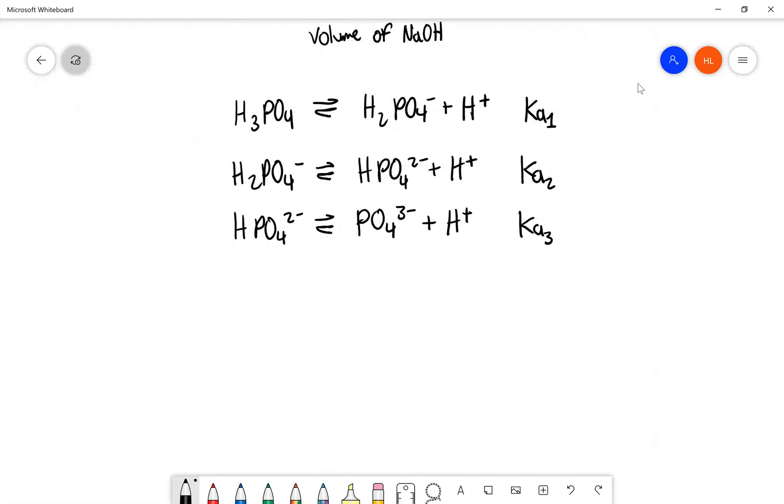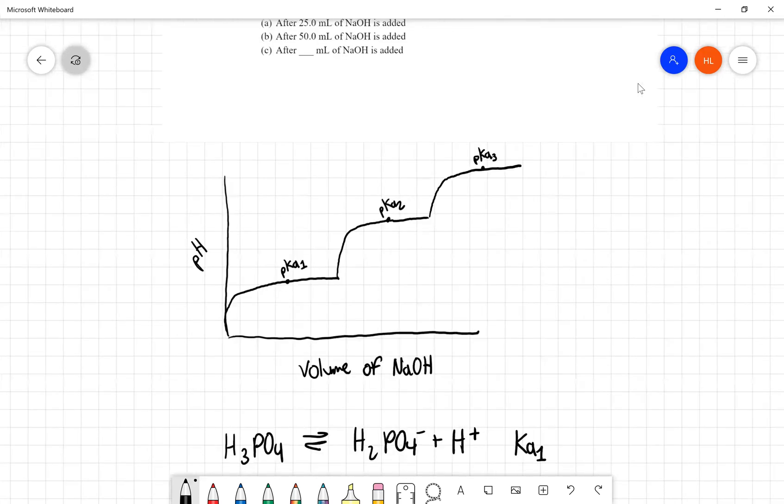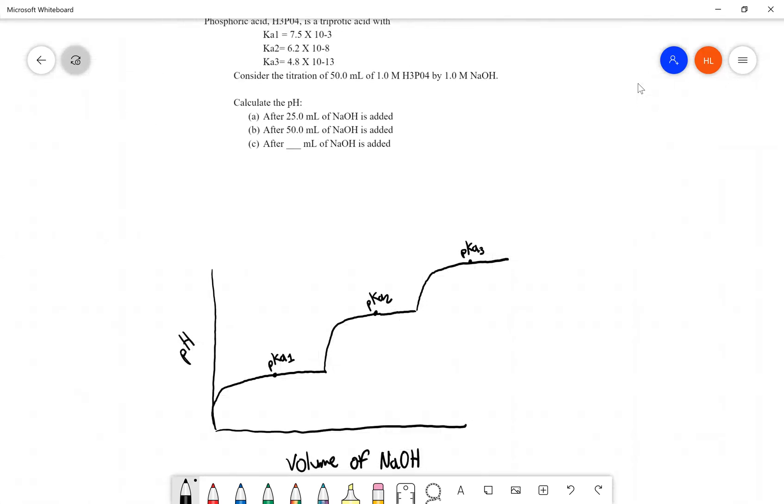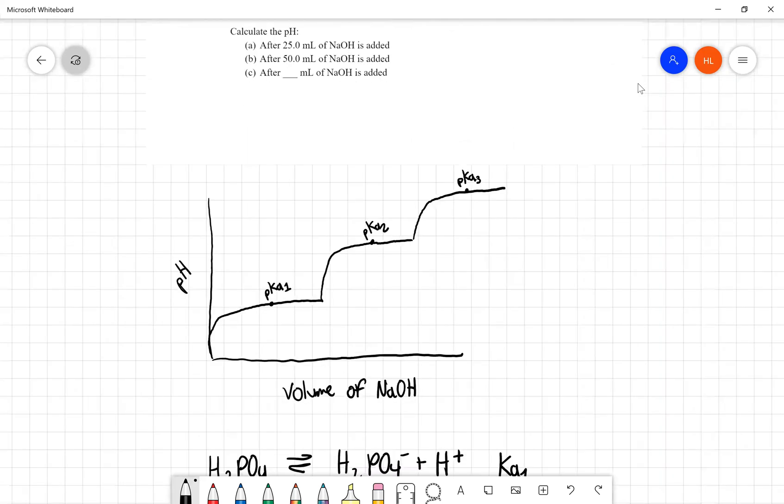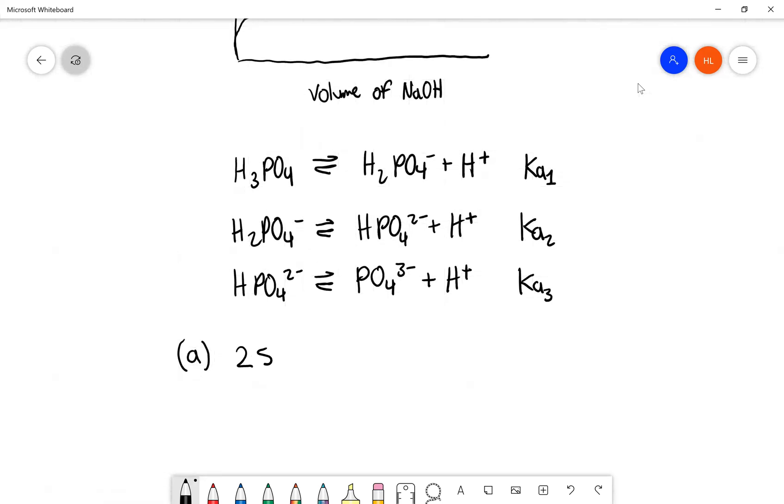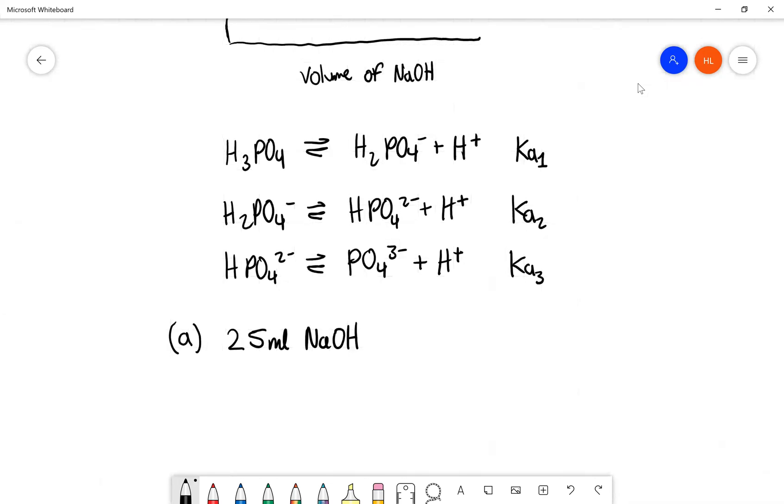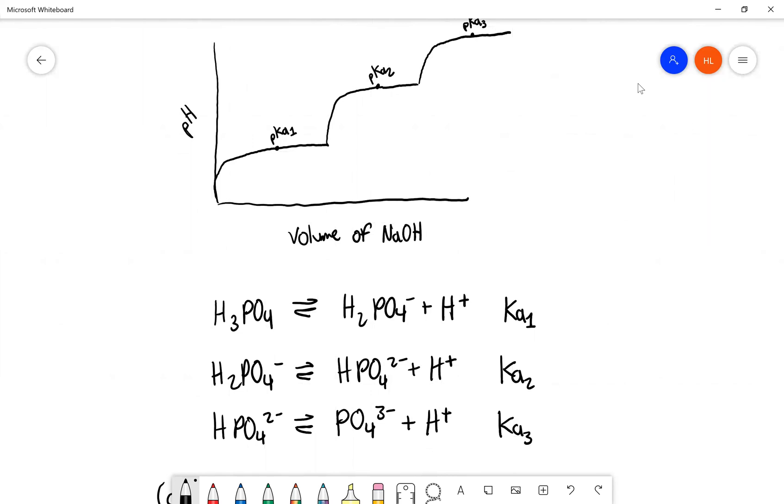And we can go back to what our question asked, which the first question asked that, let's see, after 25 milliliters of NaOH is added, so we're trying to find the pH after this amount of strong base is titrated into our weak acid. So I'm just going to write that down here, so 25 milliliters NaOH.